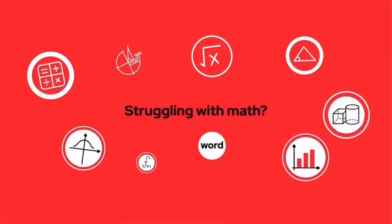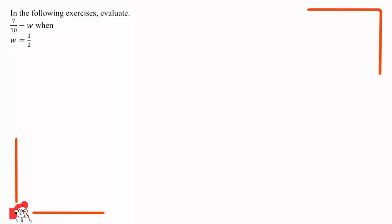Welcome to the Go-To Math class — let's make math so easy! Here is the question: in the following exercises, evaluate 7 over 10 minus w when w is equal to 1 over 2. This question wants us to calculate the whole equation with w equals 1 over 2.